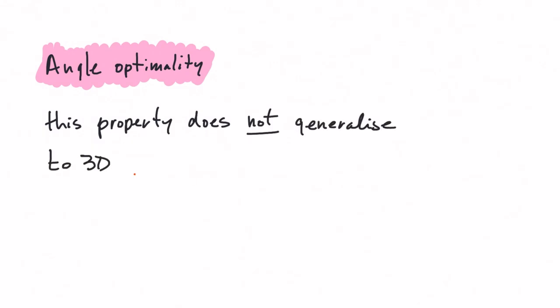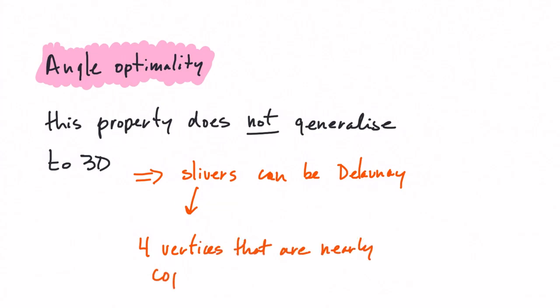That is, a Delaunay tetrahedralization will contain tetrahedra that have their four vertices located nearly on a plane. We call these slivers, and they are not very well suited for interpolation or for finite element analysis in engineering.